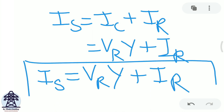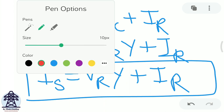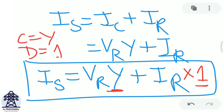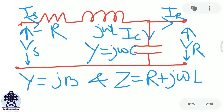We have formed the equation IS = VR·Y + IR, which relates the sending end current to receiving end voltage and current. Comparing with IS = C·VR + D·IR, we can identify C = Y and D = 1. Now we need the second equation relating VS to VR and IR.